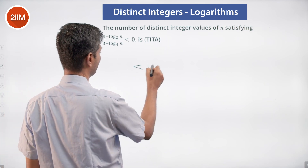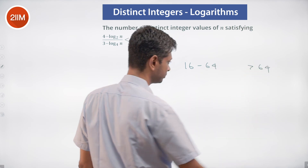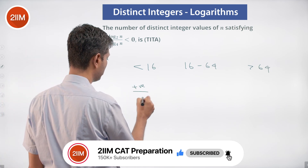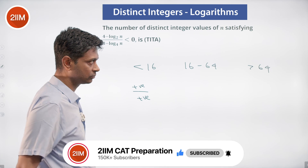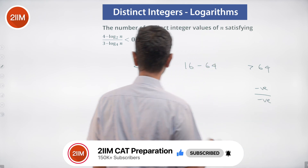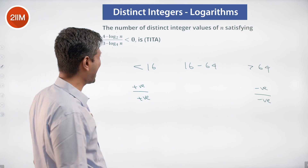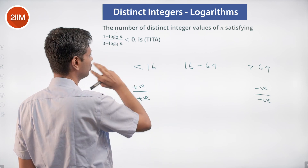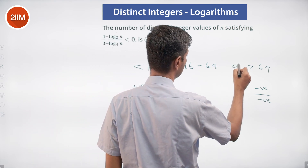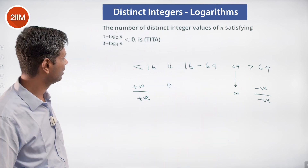I'm going to break the number line into three regions: less than 16, 16 to 64, and greater than 64. When n is less than 16, it's positive divided by positive, which is positive. When n is greater than 64, it's negative divided by negative, which is also positive — so that's definitely not less than zero. At n equal to 16, the numerator goes to 0; at n equal to 64, the denominator goes to 0, making the expression undefined.